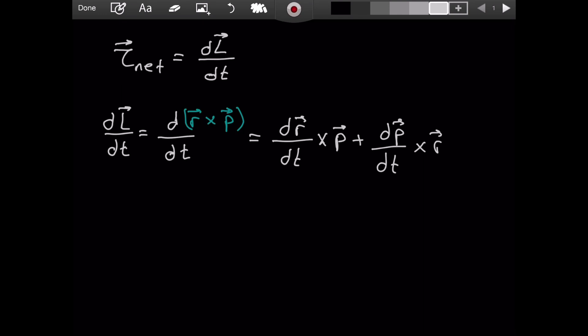You could say this, but this would be wrong. There is a very subtle but huge mistake here. The mistake is that the order of the cross product matters. You can't say that vector a cross b equals b cross a. This is not correct. That's why we need to change the order in the second term.